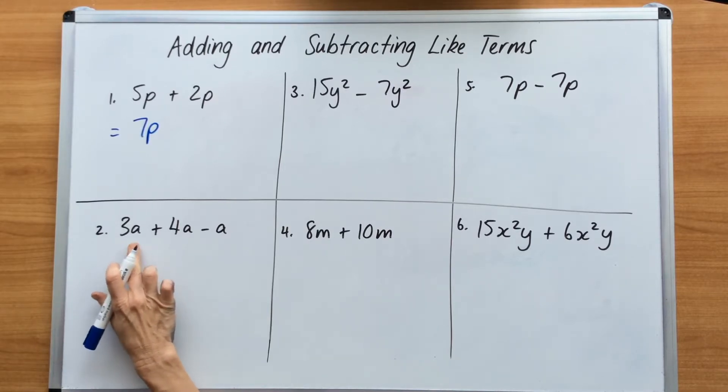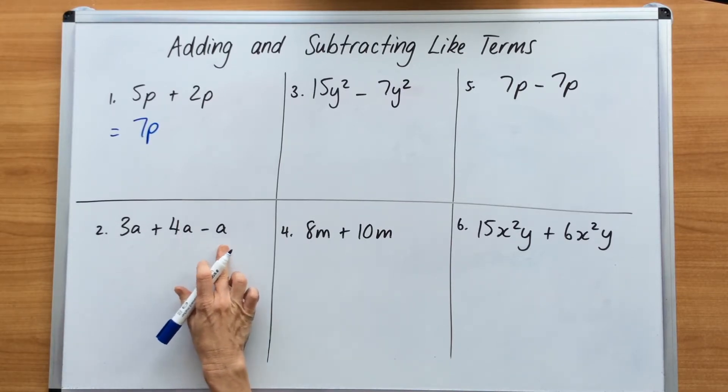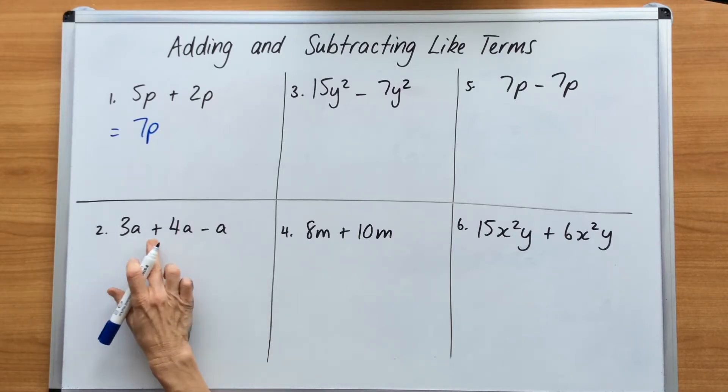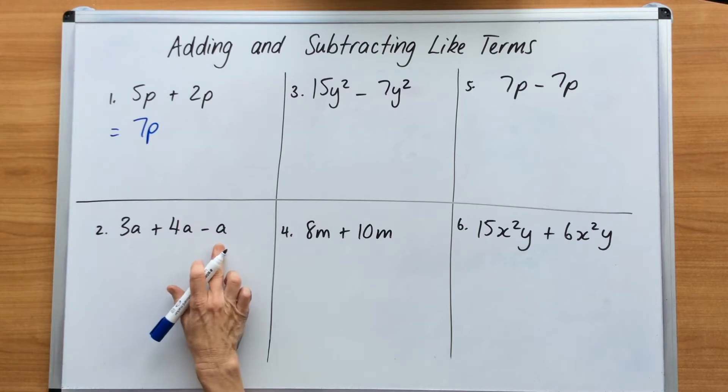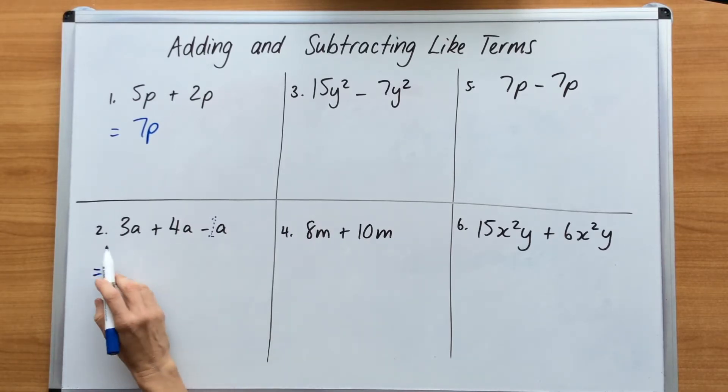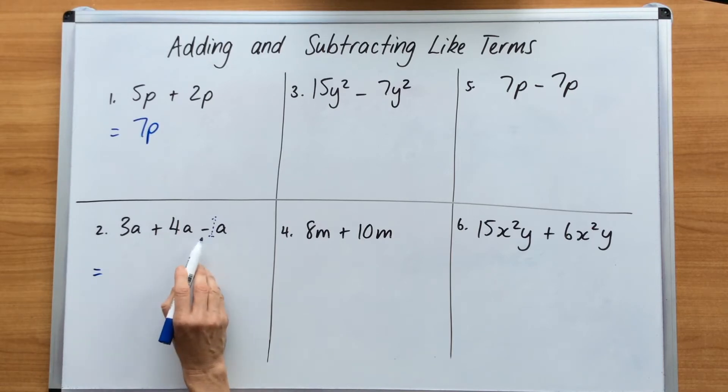Number 2 here, we've got 3A plus 4A minus A. You could also look at this thinking it was 3 apples plus 4 apples minus 1 apple. Remember, there's that invisible 1 in front that you can't see. So it's 1A. So put the equal sign down, and we can work across because it's addition and subtraction. So 3A plus 4A is 7A minus A, which is 1A equals 6A. So 6 apples.